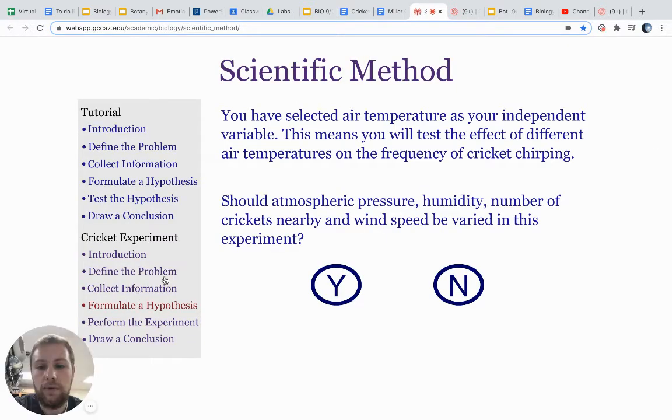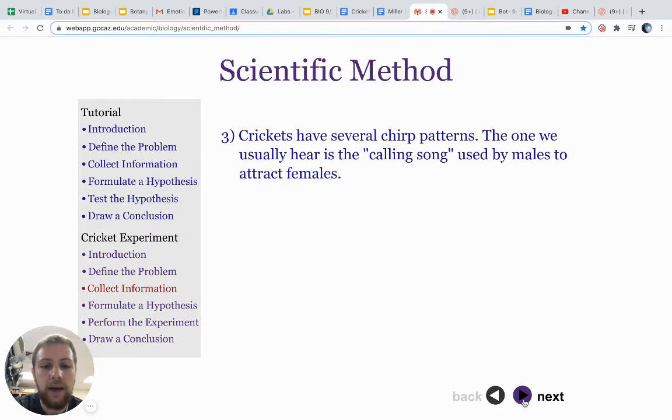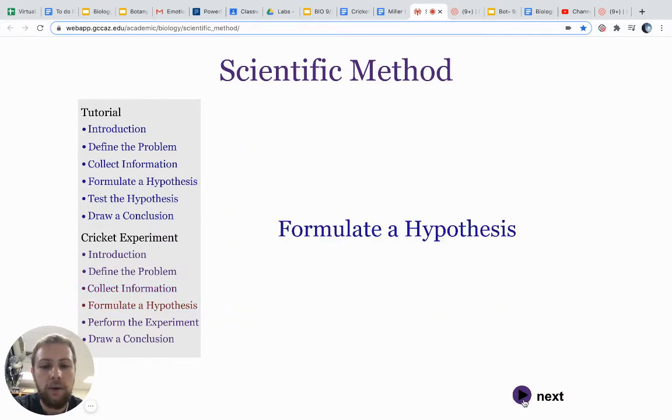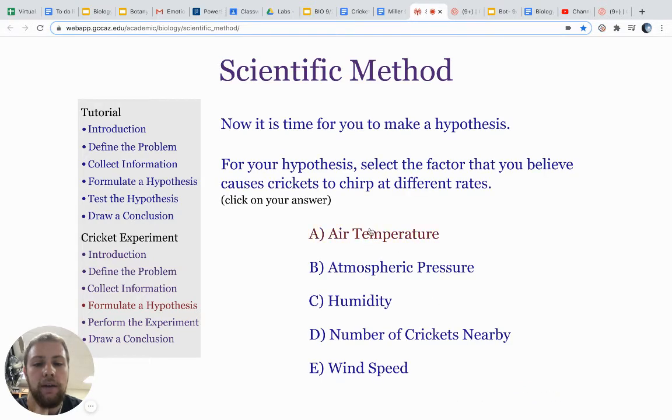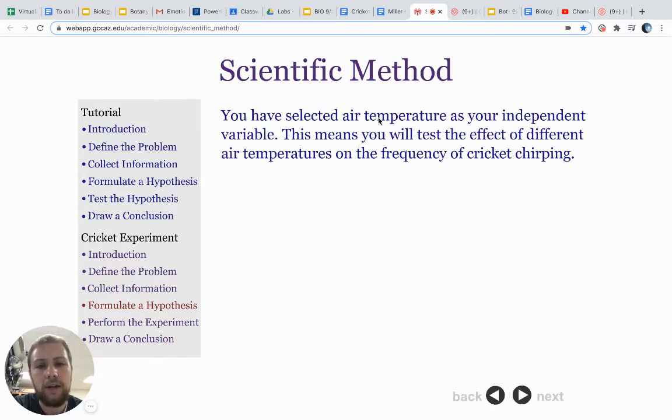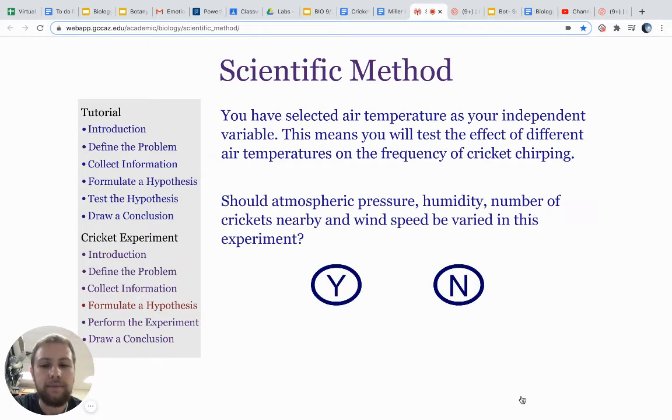Let's go ahead and look at which one we're going to choose. We want to formulate a hypothesis. Formulating a hypothesis is a key step in the scientific method. Recall that we are going to choose air temperature. So we want to know if air temperature impacts cricket chirp rate. We think it does, but we don't know for sure until we run the experiment. You have selected air temperature as your independent variable. This means you will test the effect of different air temperatures on the frequency of cricket chirping.